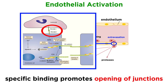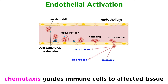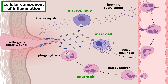To do this, PCAM1, or CD31, on immune cells binds to PCAM1 on endothelial cells, and the immune cells squeeze between the endothelial barrier into the tissue. From here, the immune cell can rely on chemotaxis in response to local molecular signals like chemokines to find the affected tissue site. Within the tissue, cells can engage in the cellular component of inflammation.